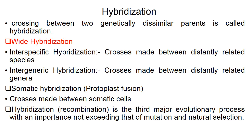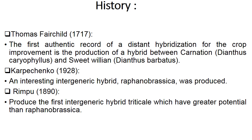History of distant hybridization: the first attempt was made by Thomas Fairchild in 1717 for crop improvement, producing a hybrid between carnation (Dianthus caryophyllus) and sweet williams (Dianthus barbatus). The second attempt was made by Rimpu in 1890, who produced the first intergeneric hybrid triticale, which has greater potential. And Karpechenko in 1928 attempted the intergeneric hybrid Raphanobrassica.